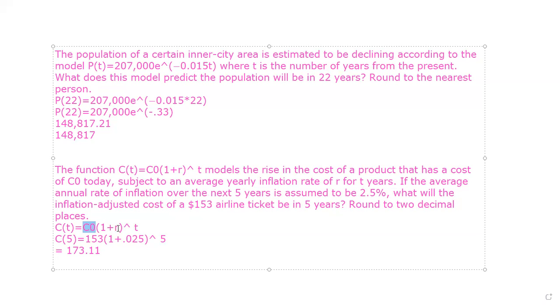And then we have our one plus R. Now this R is really similar to the ones in the interest rate formulas. Remember R is 2.5%, but you must change that to a decimal. So we're going to be plugging in 0.025. And then we want to know what is this cost going to be in five years? So that means T is going to be five.